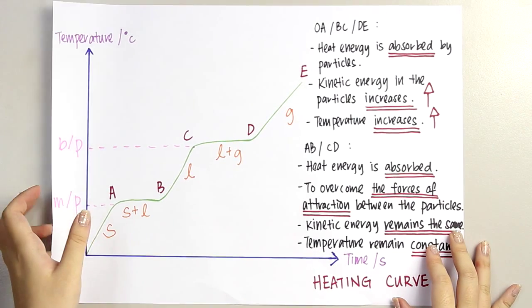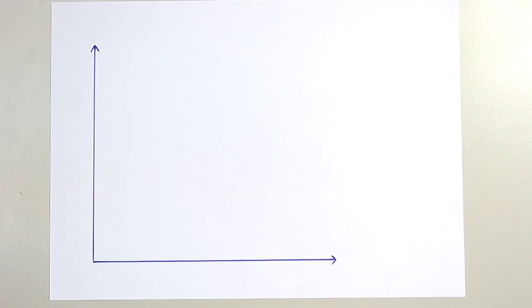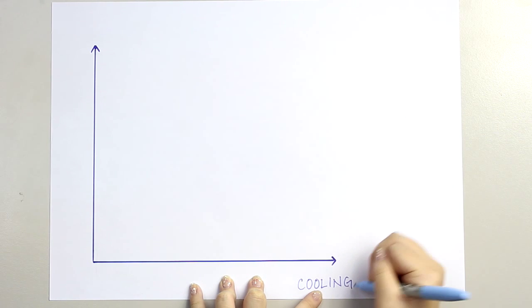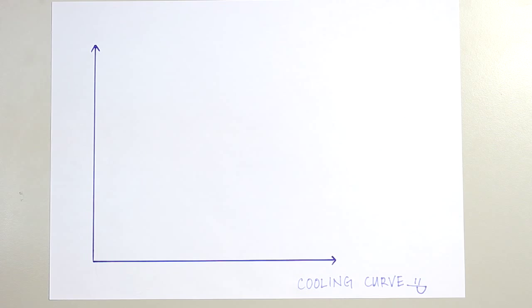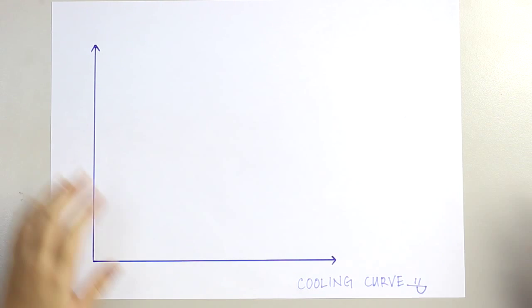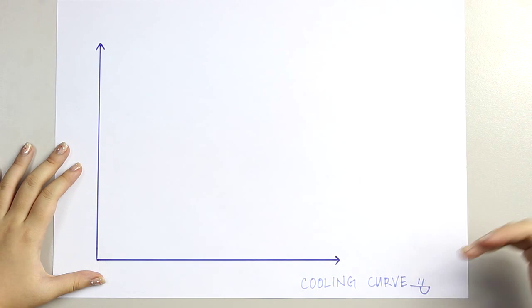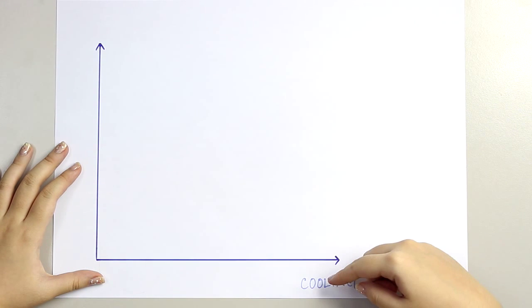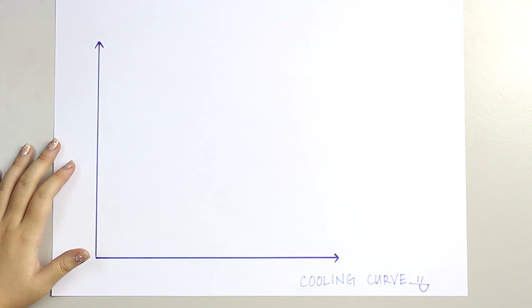Another curve we call the COOLING CURVE. If the heating curve goes up, the cooling curve is comparatively cold, therefore temperature will decrease and the graph is going down.